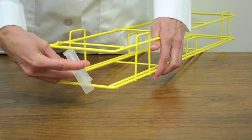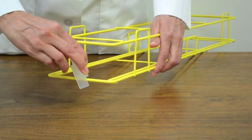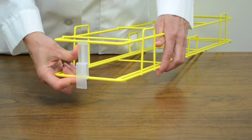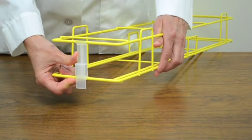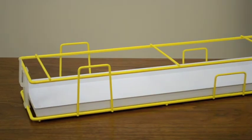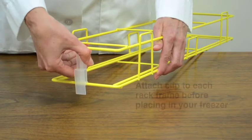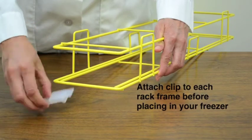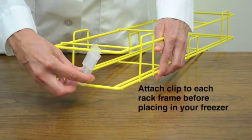Clips serve two purposes. If the tab is down, it prevents the rack from sliding forward in the freezer, and with the tab up or down, it acts as a drawer stop. It should be down for any frame that is on the bottom row and sits right on the freezer rack, and up for any frame that will form higher rows.